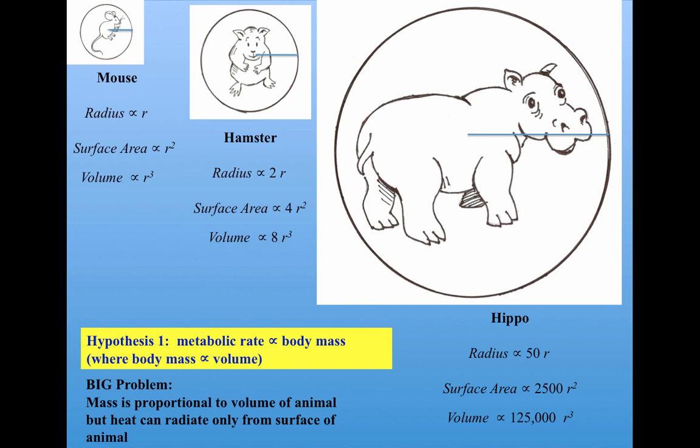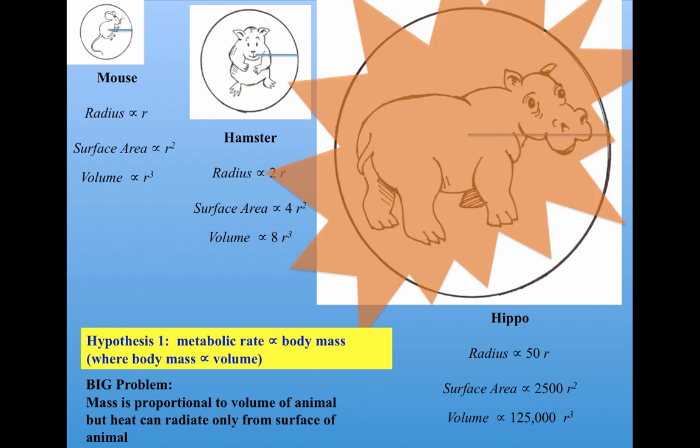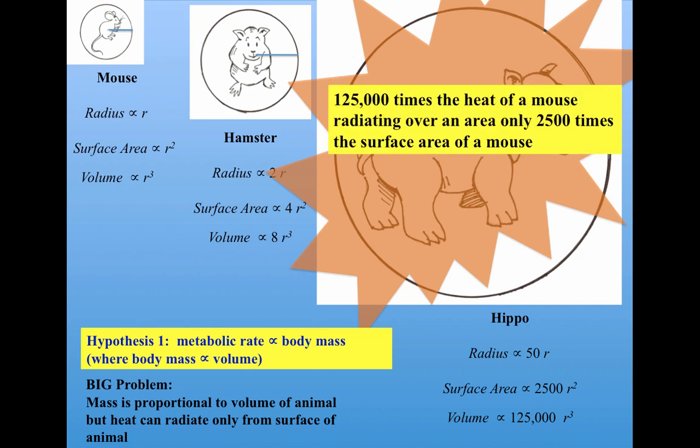The problem is that while the mass is proportional to the volume, heat can only radiate from the surface. What does that mean? That means that the amount of heat is proportional to the volume, a huge number, but that heat can only radiate over a much smaller number, the surface area. In our hippo, we have 125,000 times the heat of the mouse, that is proportional to the volume, radiating over an area that's only 2500 times the surface area of a mouse. So a huge amount of heat radiating over a relatively smaller area can produce only a very hot hippo, a hippo that's burning up.